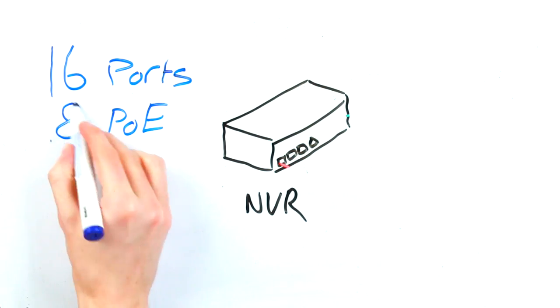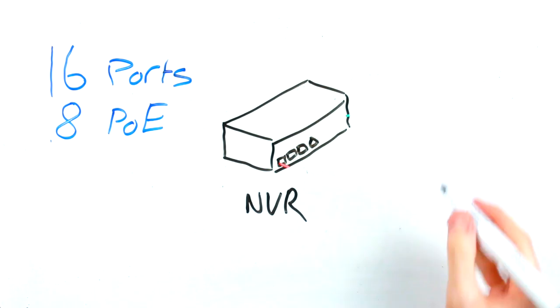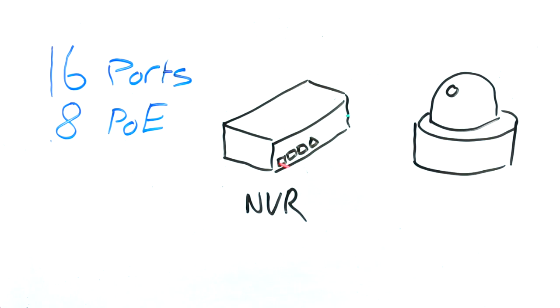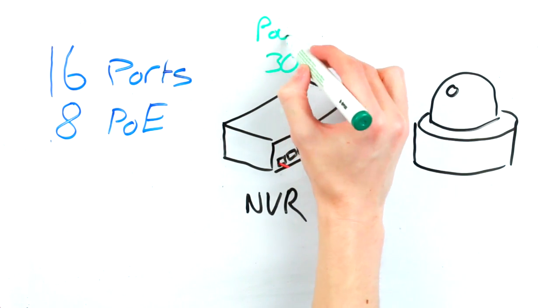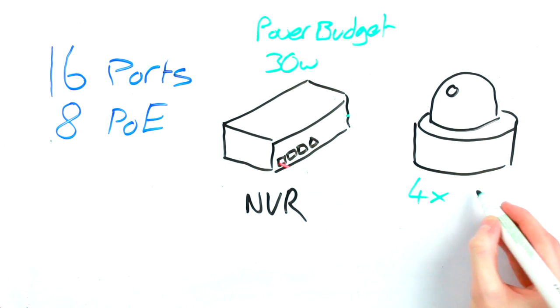Also, unlike a NAS, an NVR can usually operate as a PoE switch as well as a recorder. But be careful and check that the NVR you have chosen both has enough PoE ports to support the number of cameras you have and that the power budget of the built-in switch is large enough to power all of your cameras.